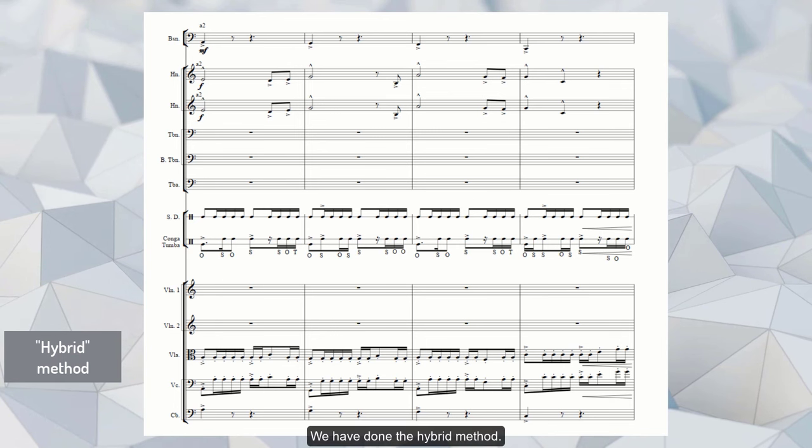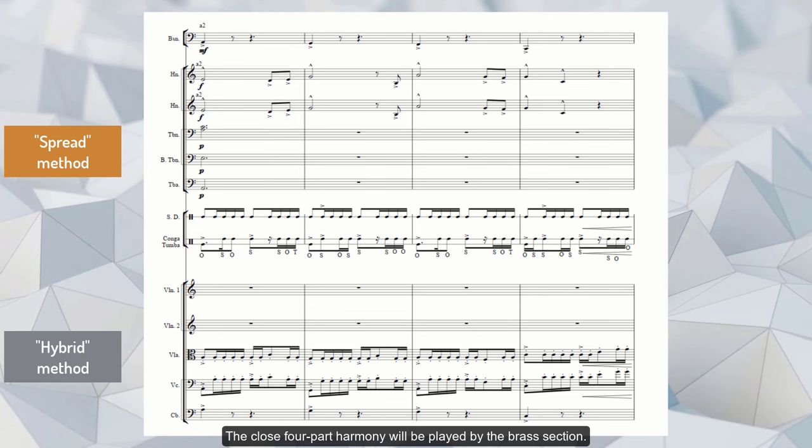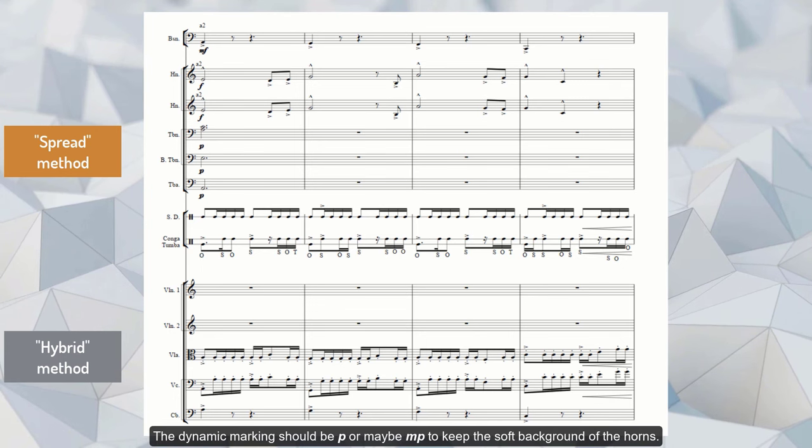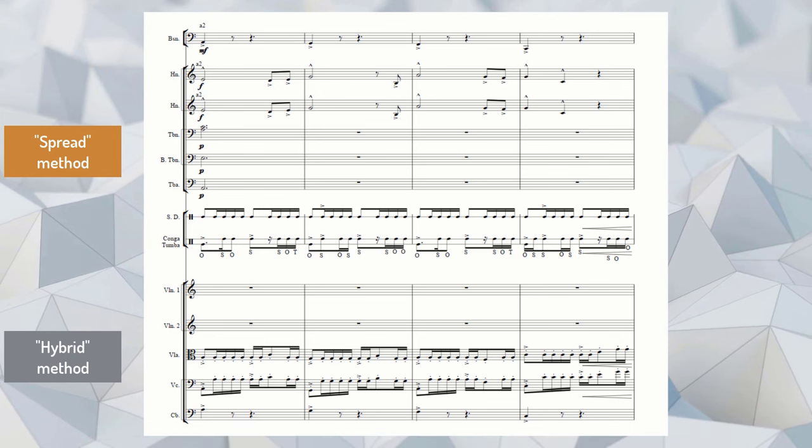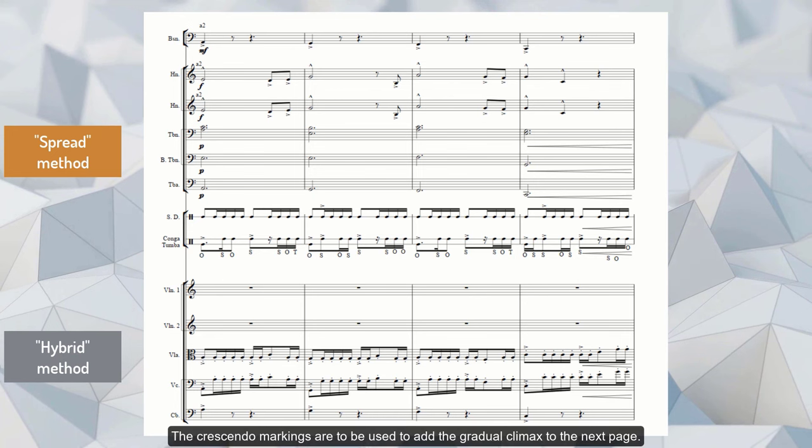The contrabass will be doubled by bassoons. We have done the hybrid method. Now I'm gonna add the spread method below the melody. The close four-part harmony will be played by the brass section. The dynamic marking should be piano or maybe mezzo piano to keep the soft background of the horns. The crescendo markings are to be used to add the gradual climax to the next page.